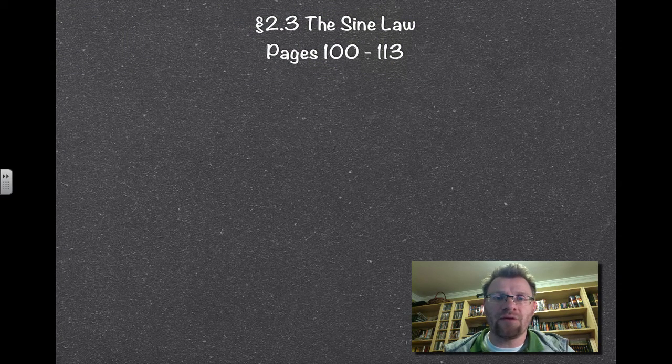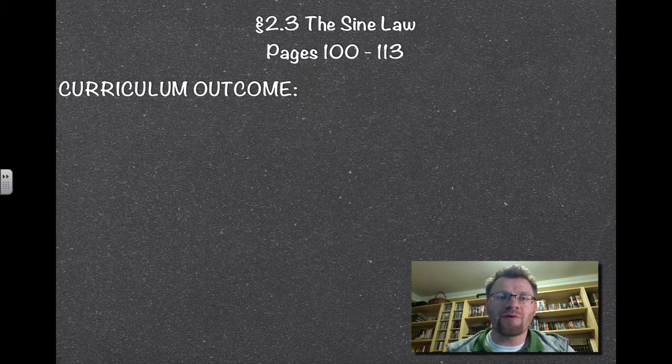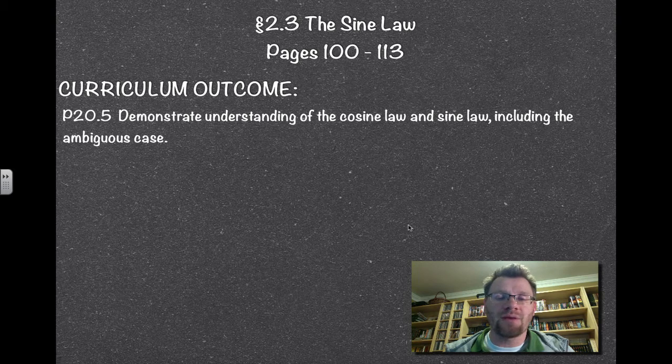So today's topic is 2.3, the sine law, found on pages 100 to 113 in your text. Your curriculum outcome is 20.5, to demonstrate understanding of the cosine law and the sine law, including the ambiguous case.